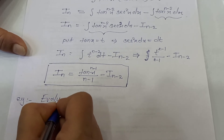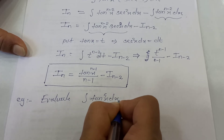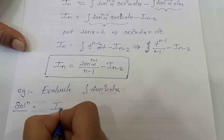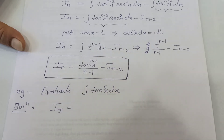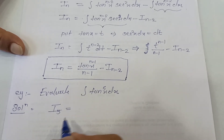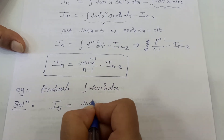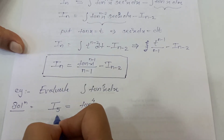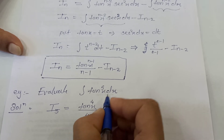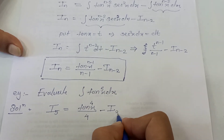Let's evaluate the integration of tan raised to 5 times x dx. In notation, this is I_5. Let's evaluate it using reduction formula 3. I_5 equals tan raised to n minus 1, where n is 5, so n minus 1 is 4. It is tan raised to 4 upon 4, minus I_{n-2}.